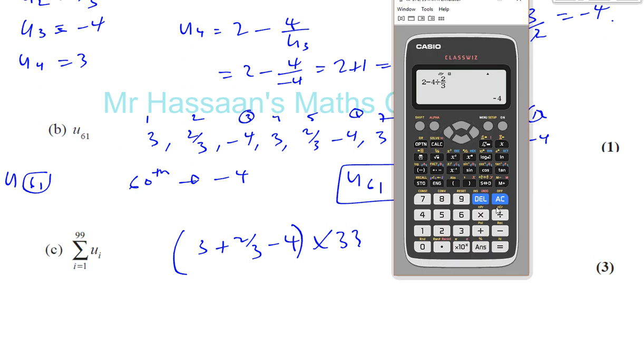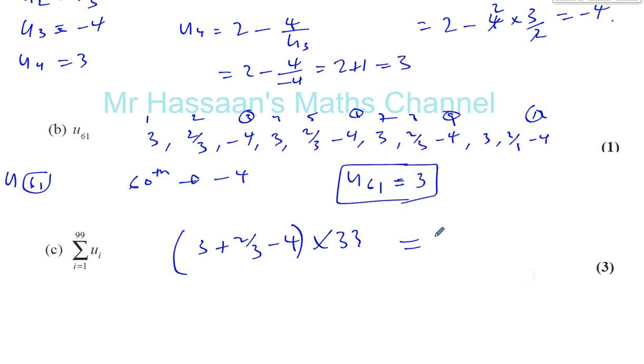So if we do 3 plus 2 thirds, and then minus 4, that's going to be minus 2 thirds minus 1, basically, which is minus 1 third, times 33. That gives you negative 11. That's the answer. We could have just done that in our heads, actually. 3 minus 4 is minus 1, 2 thirds minus 1 is minus 1 third, minus 1 third times 33 is minus 11.